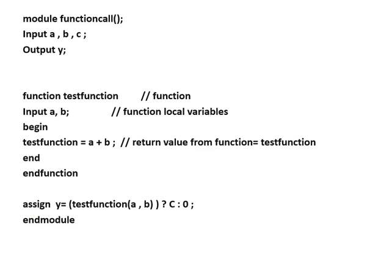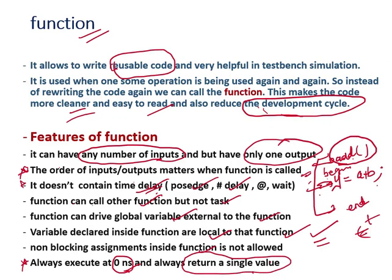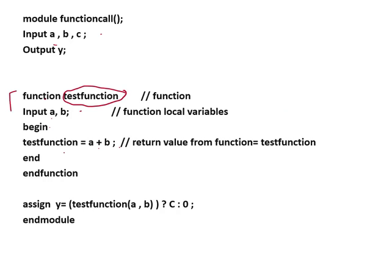Here is an example. Module with inputs a, b, c and output y. The function name is 'test_function', with inputs a and b. Inside: 'begin test_function = a + b'. The function always returns a single value and executes at zero nanoseconds. It is returning a plus b, and the return value is stored in the function name. So 'return value from function = test_function' — whatever value is returned, the addition of a and b is returned to the name 'test_function'.